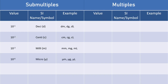We then have micro, which is one-millionth of the base SI unit, denoted by the Greek letter mu. After that is nano, which is one-billionth of the base SI unit, denoted by a lowercase n. And then we have pico, which is one-trillionth of the base SI unit, denoted by a lowercase p. There are more submultiples than just these, but these are the ones you have to remember for the IMAT.